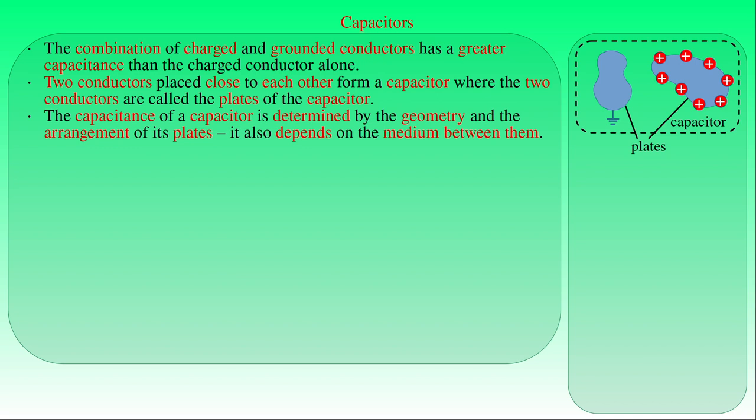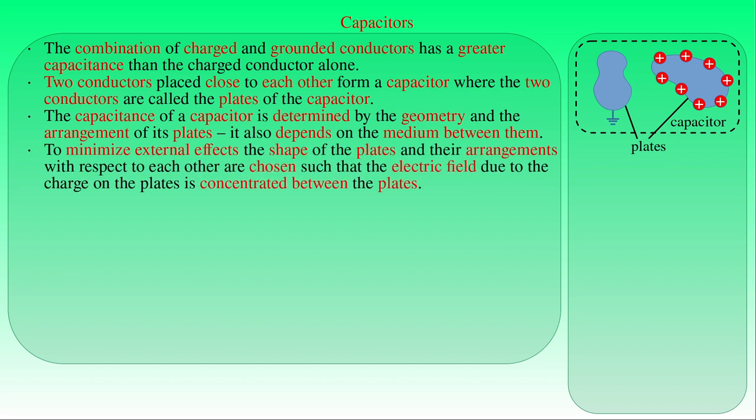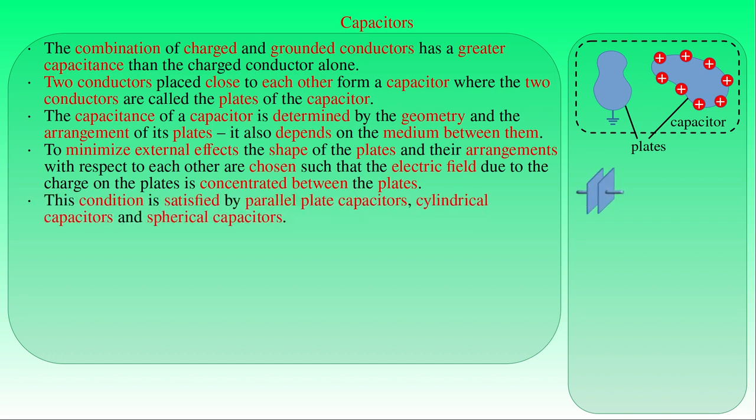Furthermore, capacitance also depends on the medium between the two plates. In order to prevent external objects from affecting the capacitance of a capacitor, or just to minimize their effect, it is desirable to choose the shape of the plates and their arrangement such that the electric field due to the charges on the plates is concentrated between the plates. This condition can reasonably be satisfied by two parallel flat plates separated by a small distance, known as a parallel plate capacitor; two coaxial metallic cylinders, called a cylindrical capacitor; or two concentric metallic spheres, known as a spherical capacitor.